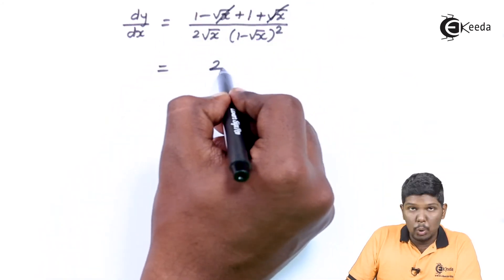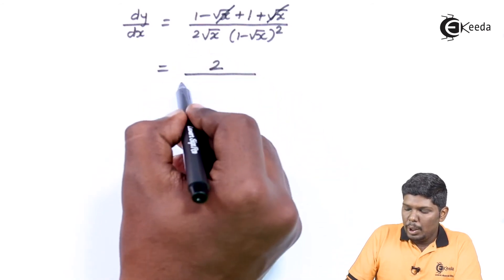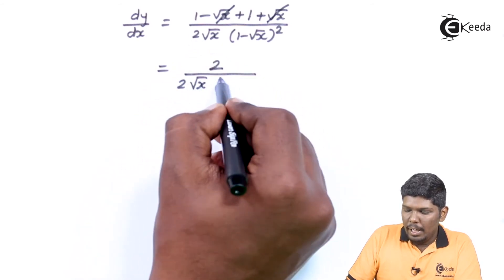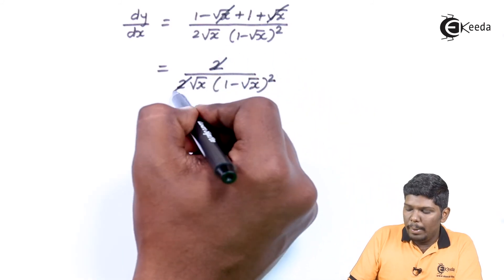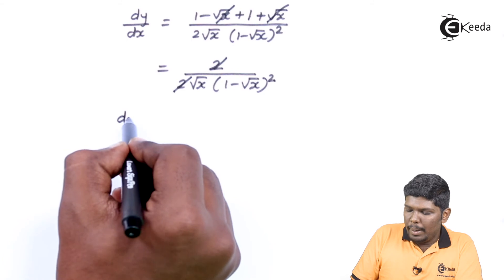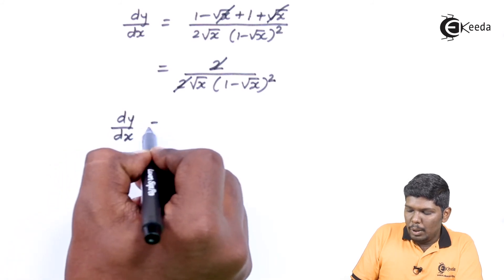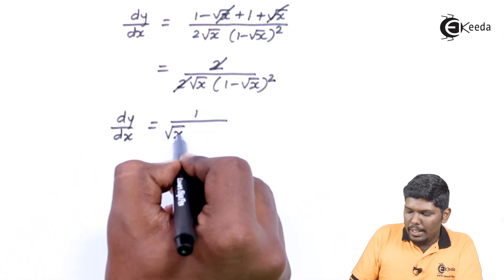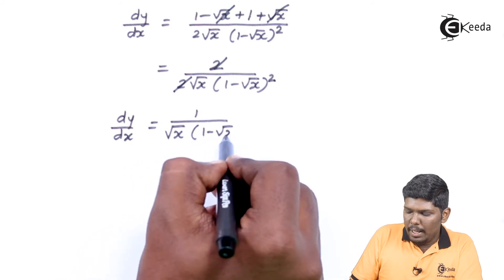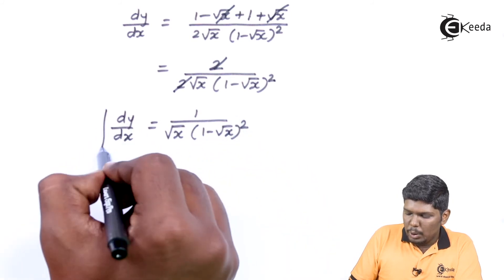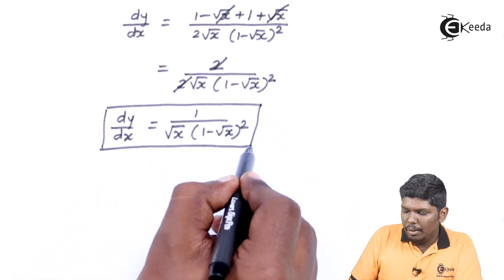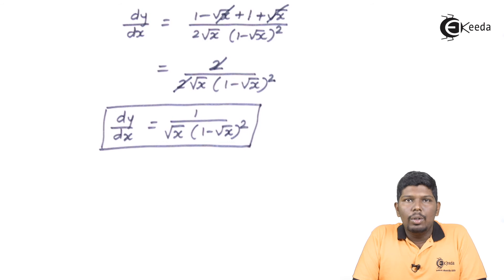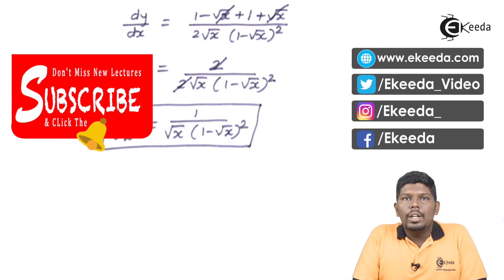So we get 2 upon 2√x into (1 - √x) squared. The 2 in numerator and denominator cancel, giving the final answer: dy/dx = 1 upon √x into (1 - √x) squared. This is the derivative of the given function. I hope you have understood this video — thank you for watching, stay tuned with Ikida and subscribe.